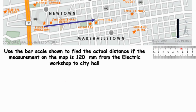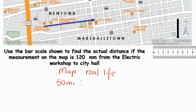So when we measure our bar scale, we measure five centimeters or 50 millimeters. I will work with 50 millimeters because they have already measured in millimeters, so it's going to be easier. Map as to real life — that would be 50 millimeters, which represents 600 meters in real life.